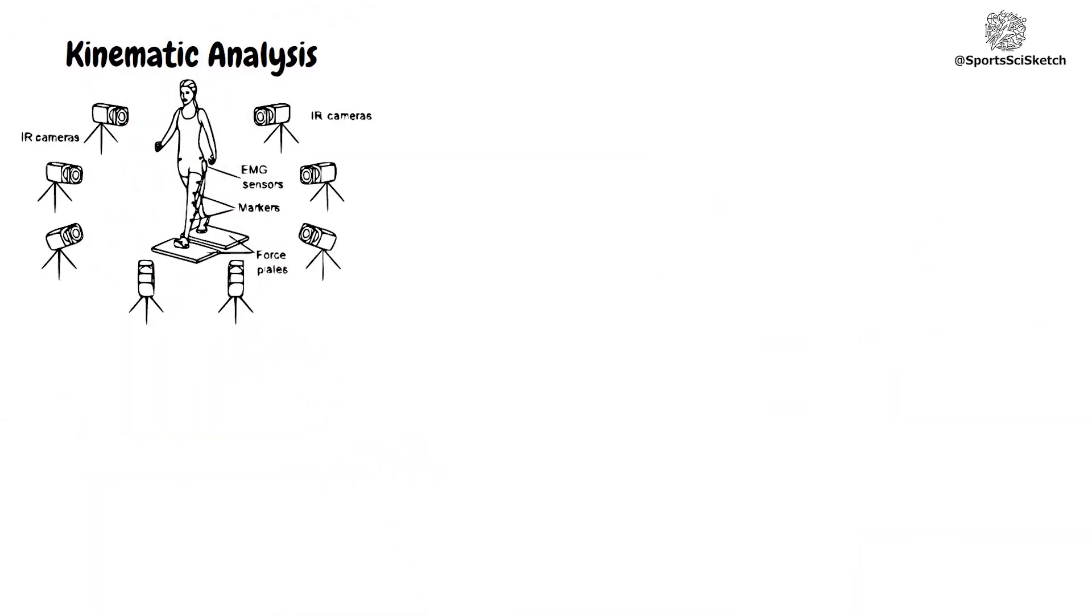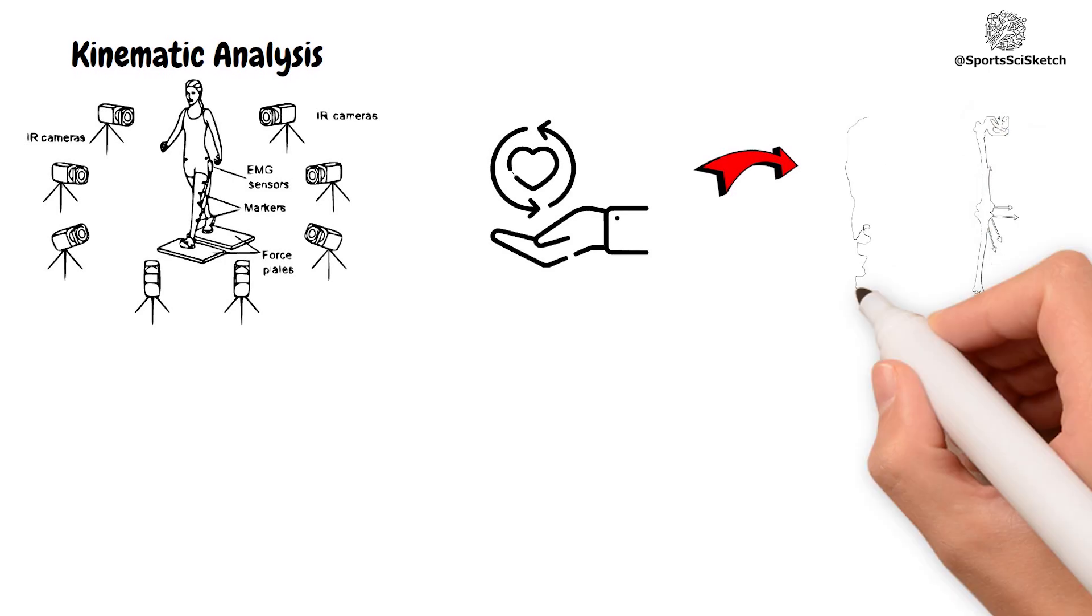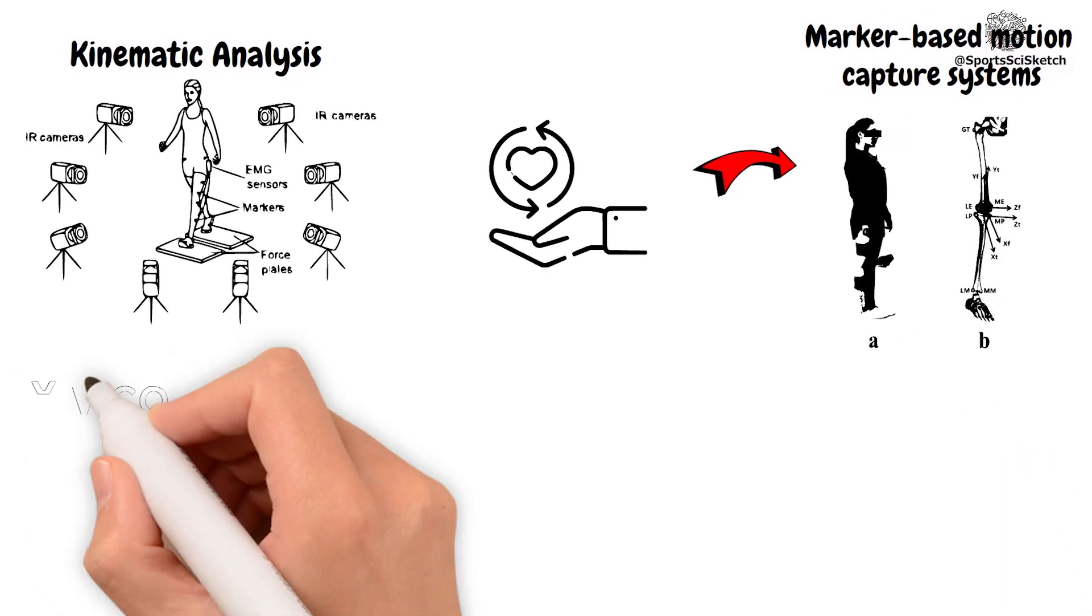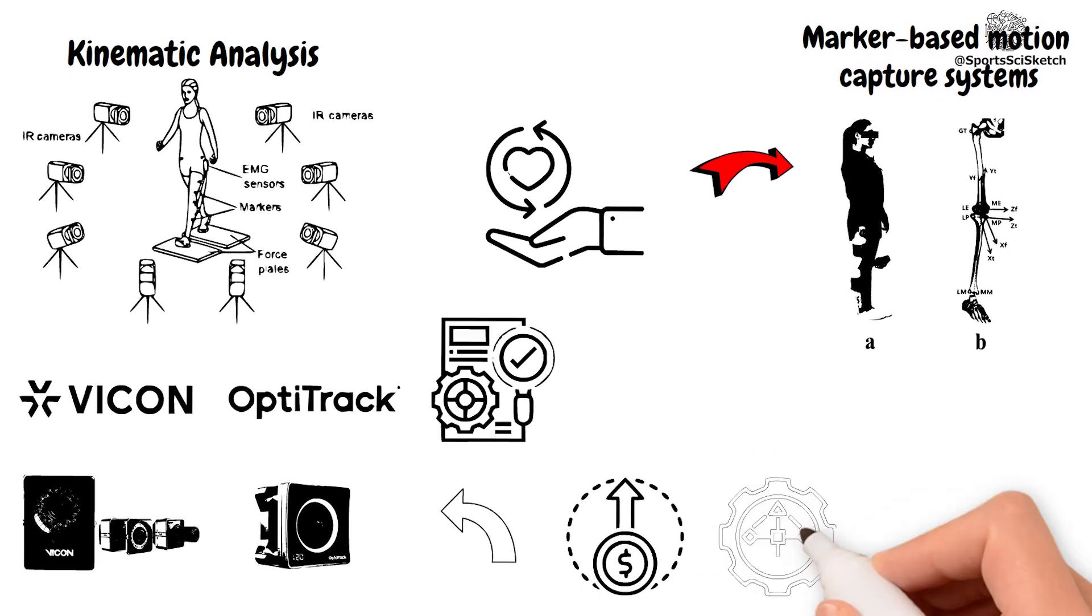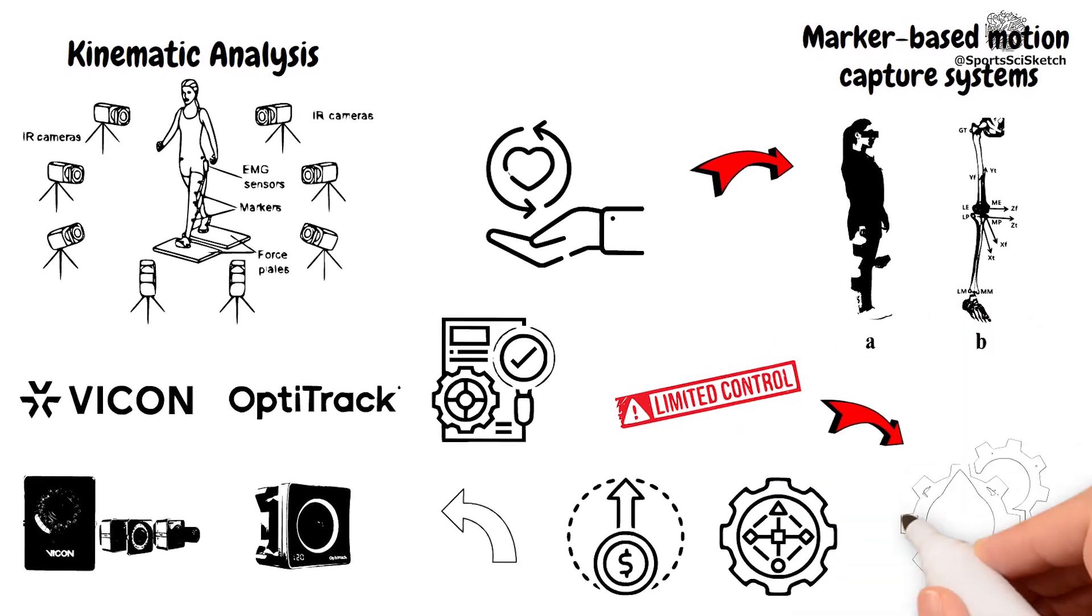Traditional kinematic analysis has relied heavily on marker-based motion capture systems such as Vicon and OptiTrack. While accurate, these systems are costly, complex, and limited to controlled environments.